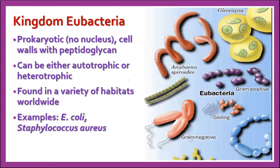Kingdom Eubacteria are the common bacteria that you're used to hearing about. They're prokaryotic — no nucleus. Their cell walls do have peptidoglycan. They can be either autotrophs or heterotrophs depending on species, and they're found in a lot of places worldwide — in the soil, on your skin, in your gut. Most of the bacteria that cause diseases, like Staph aureus or Strep pyogenes, which causes flesh-eating disease, are ones that you commonly come in contact with. We'll spend more time in a couple of weeks talking about bacteria.